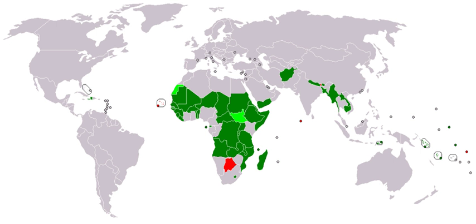Over the last few decades, global population growth has largely been driven by developing countries, which often have higher birth rates than developed countries. According to the United Nations, family planning can help to slow population growth and decrease poverty in these countries.